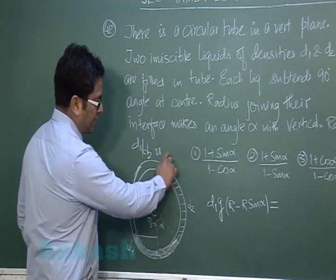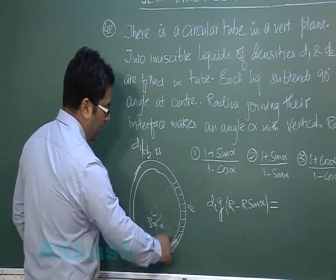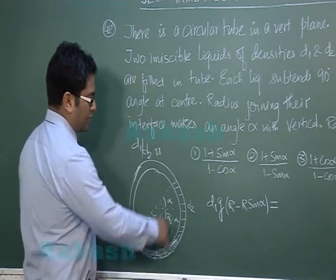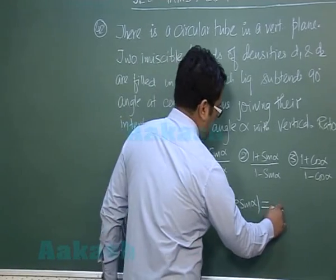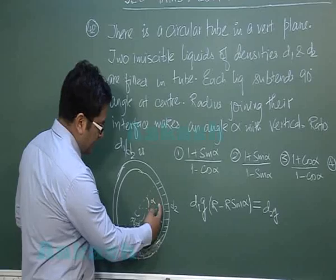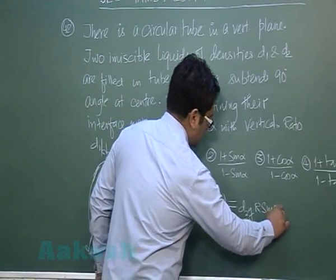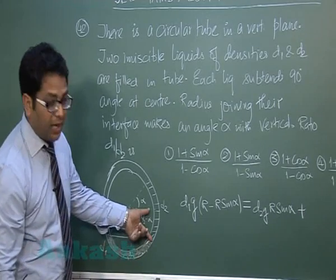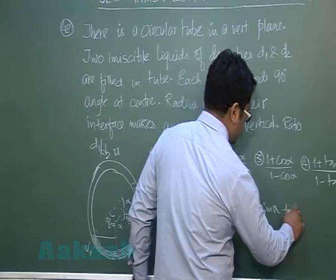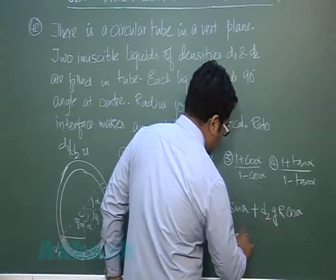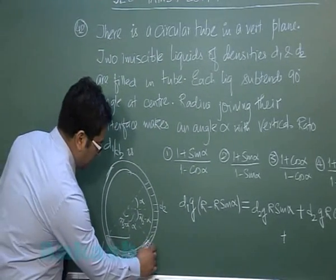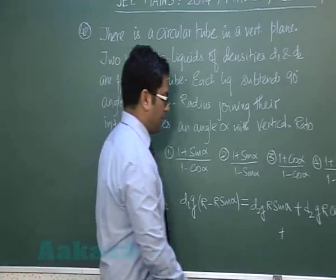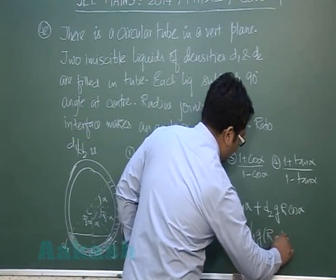Now, pressure at the same point starting from the right-hand side: here is 0, then I need the vertical height. This angle would be π/2 minus alpha, and this angle would be alpha. From here, going down, first is D2 g times R sin(alpha) plus this height, which is R sin(π/2 - alpha). Then plus D1 g times R minus R cos(alpha).